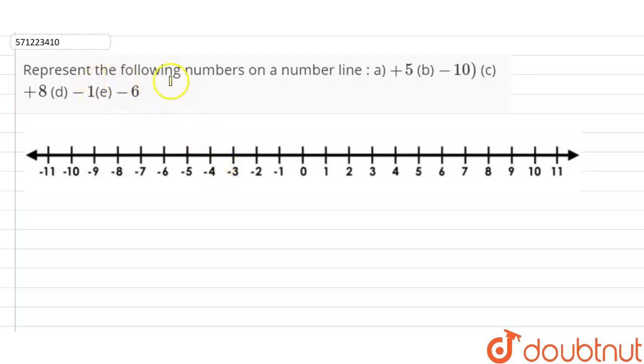Hi students, our question is, represent the following numbers on number line: A plus 5, B minus 10, C plus 8, D minus 1, E minus 6.